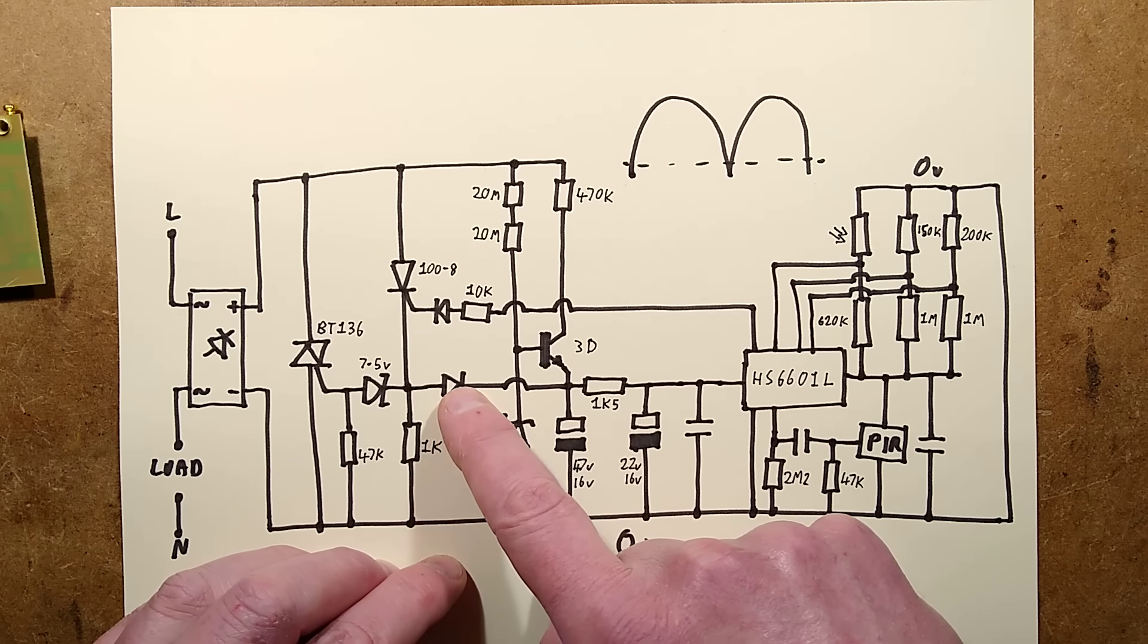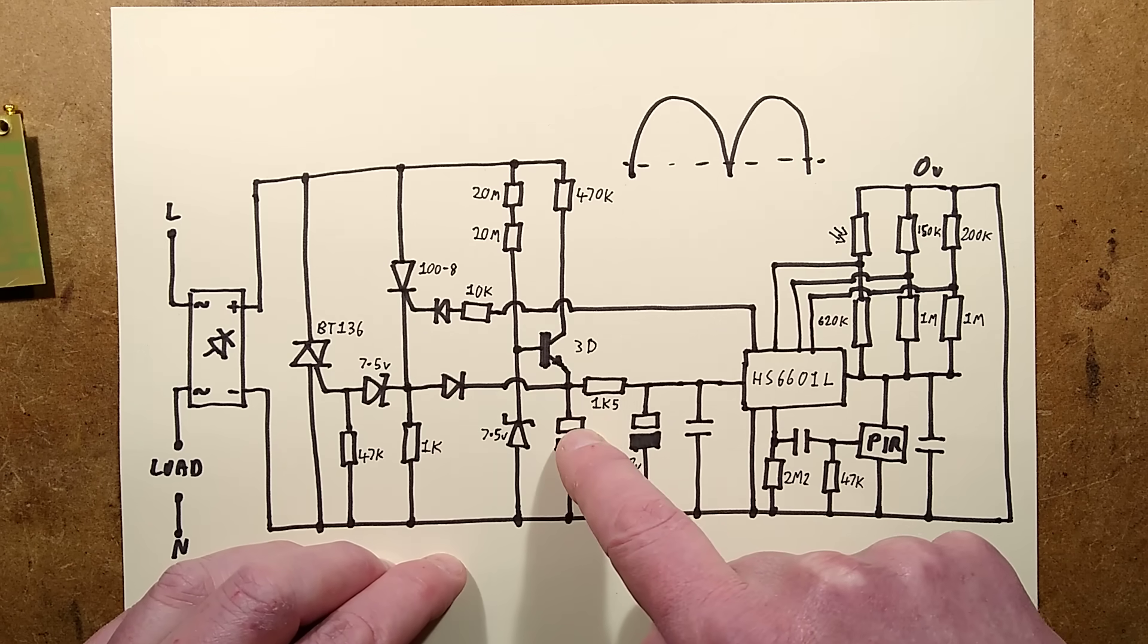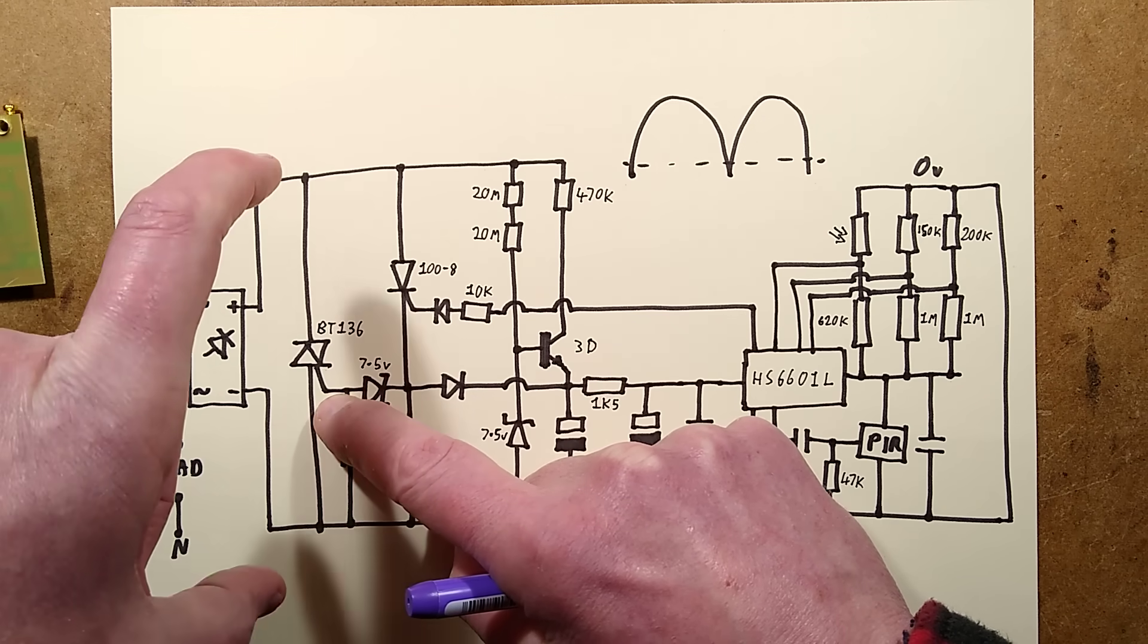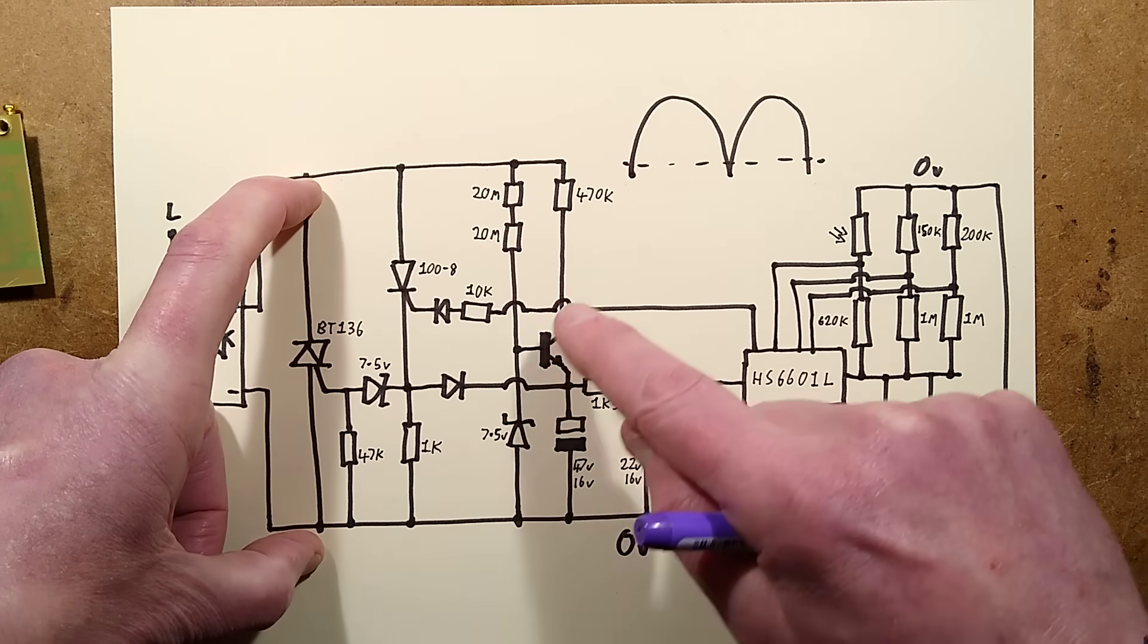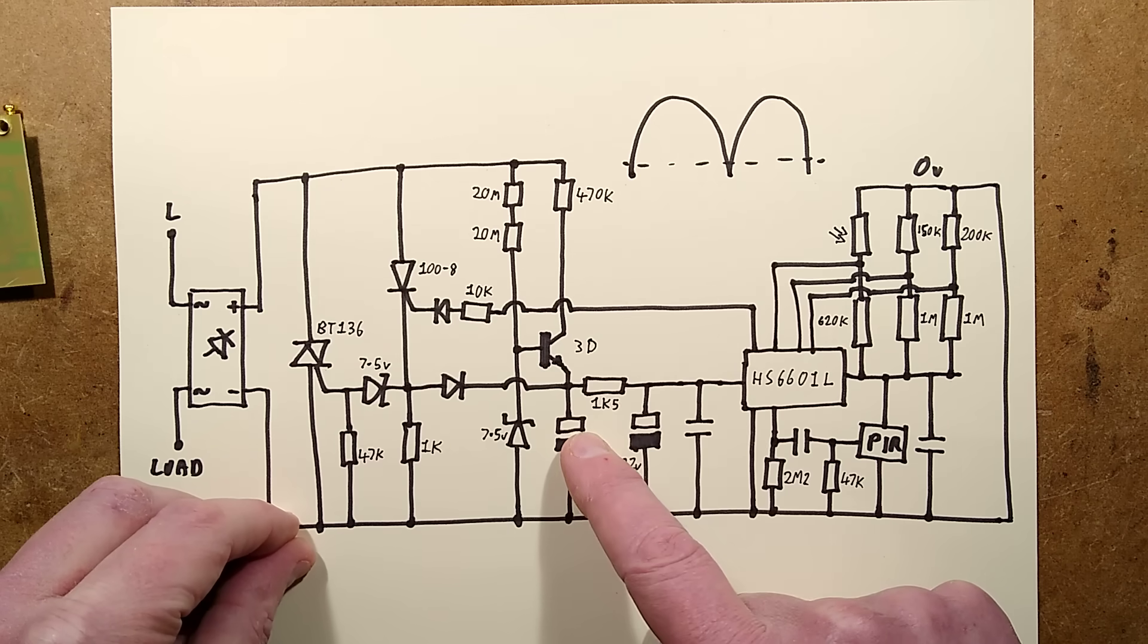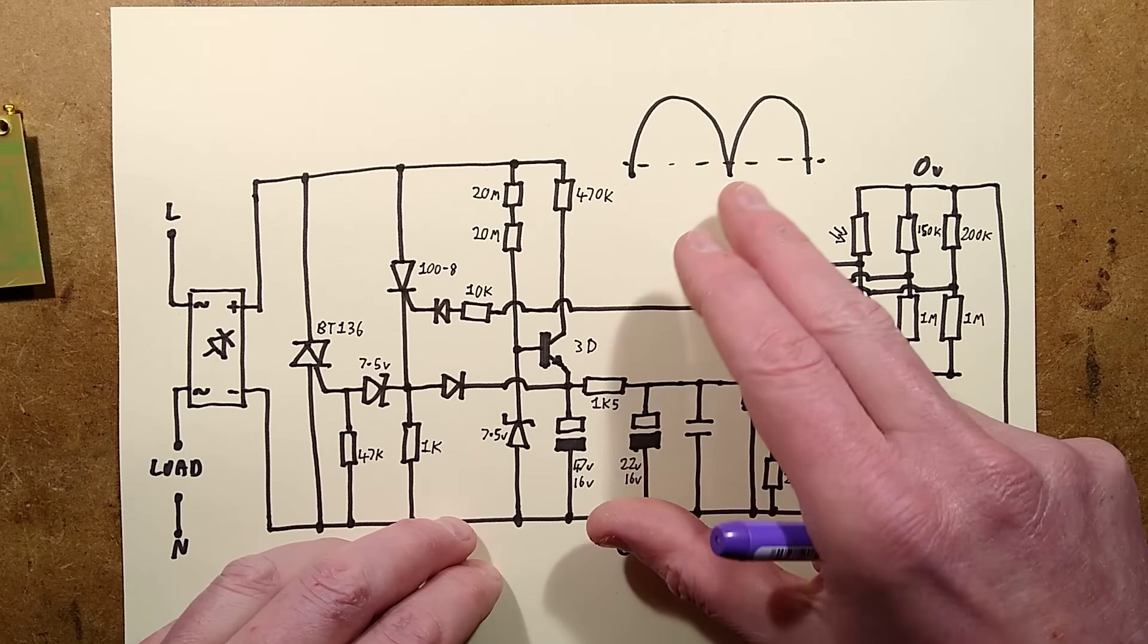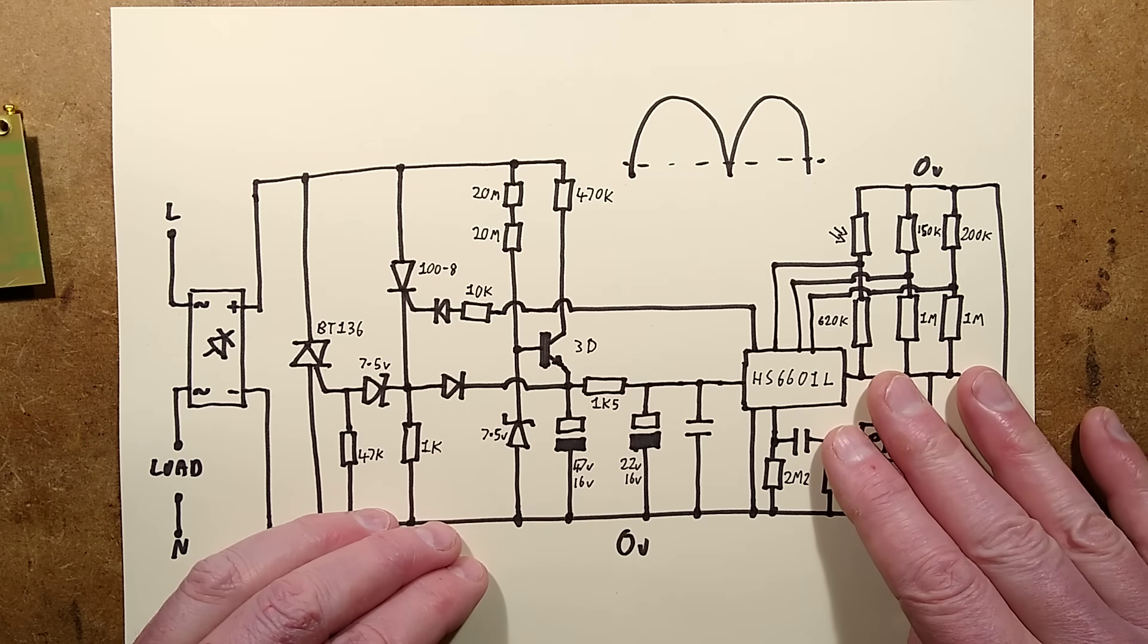And when the triac does turn on, this thyristor isn't driving the gate of this triac continually. As soon as the triac turns on, it shunts this supply rail, so there won't be any current going into that capacitor. So it needs that zero crossing point. The current is being pumped directly over to that capacitor to keep it topped up. Quite interesting. Basically the power supply is derived in two different ways. One when the light is turned off and one when the light is turned on. It is very sophisticated.